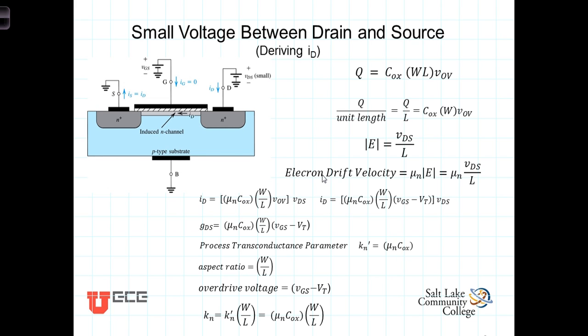Having induced a channel of free electrons by increasing VGS to the point that it was equal to the threshold voltage, we've effectively created a conductor between the source and the drain filled with electrons. But no current flows through this channel until a voltage is applied across it. In this video, we're going to consider the effects of applying a small voltage to the drain.